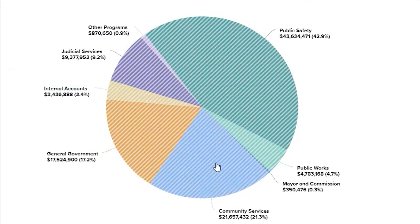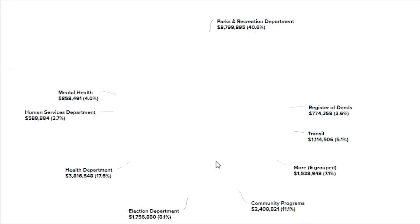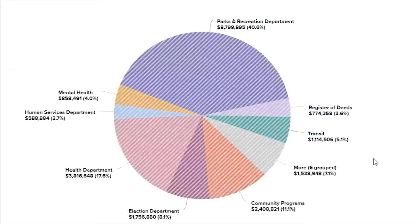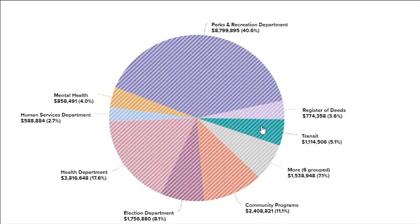21.3% goes to community services, which if we explore further, makes up the following county departments. 40.6% of county community services goes to the parks and recreation department, which provides and maintains parks and recreation facilities and services for the county. 17.6% goes to the health department, which provides health services and health education services to the county. 5.1% goes to transit, which provides public transportation for the elderly across the county.